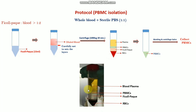The total volume in the tube should not exceed 45 ml. Here you can see: the first layer is the blood plasma, then the PBMC layer, then the Ficoll-Paque which is very transparent, and the lower layer is the RBCs.